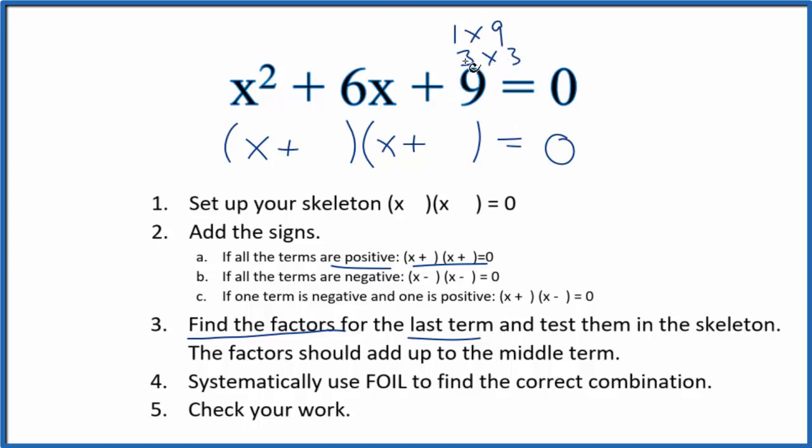We can pretty quickly see that 3 times 3 gives us 9. 3 plus 3 gives us this 6. So we'll put a 3 here and a 3 here.